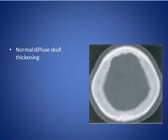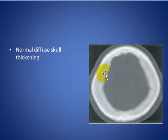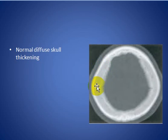This is the normal diffuse skull thickening. As you can see here, there is thickening and expansion of the diploic space, and this is a normal variant.